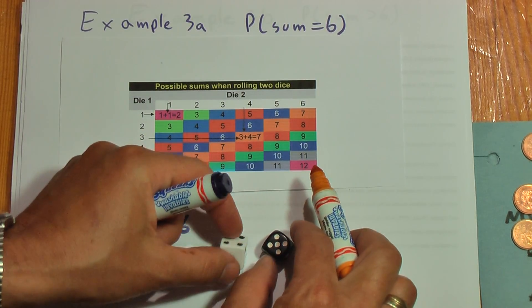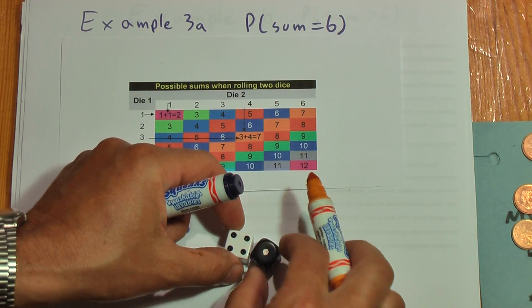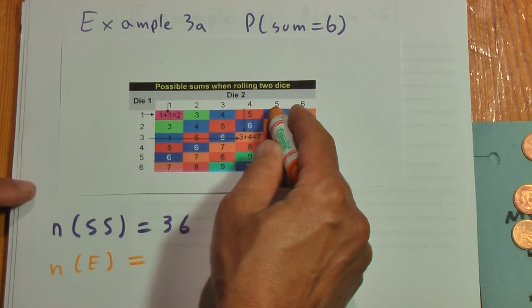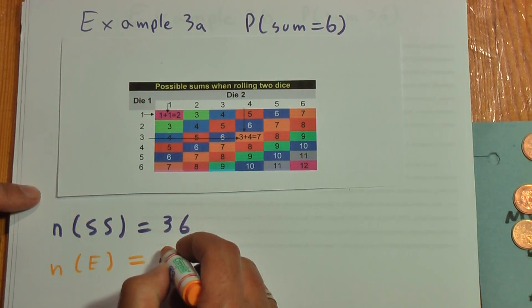So if we look on this: 1 and 5, 4 and 2, and we keep going until we have all the possibilities. But this chart really helps. I know I have 1, 2, 3, 4, 5 possibilities.